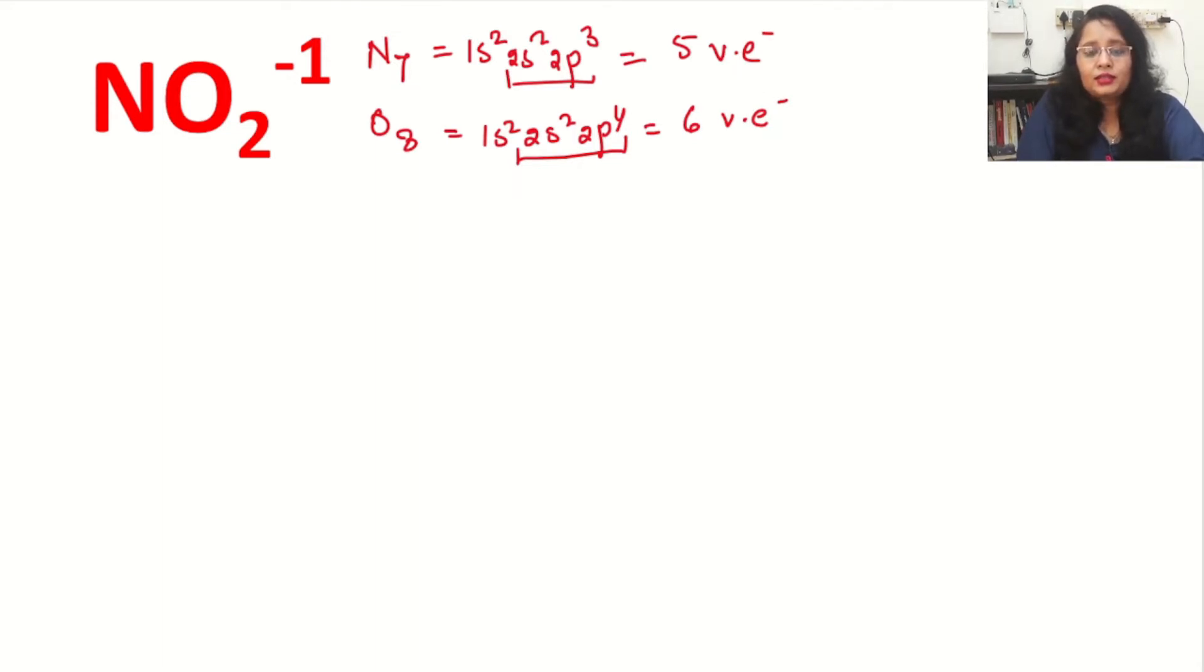Now the other thing is we will get the total valence electrons in the molecule. For nitrogen it will be 5. For oxygen it will be 6 into 2 because 2 oxygen atoms and a minus charge means we will add 1. If there will be a plus charge we will minus from the total. So here it will be 5 plus 12 plus 1 equals 18. 18 total valence electrons are there. These will be shown in the structure.